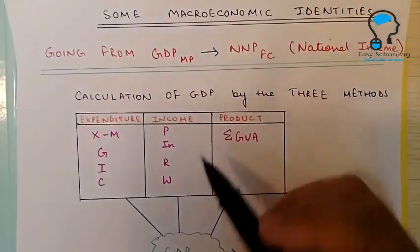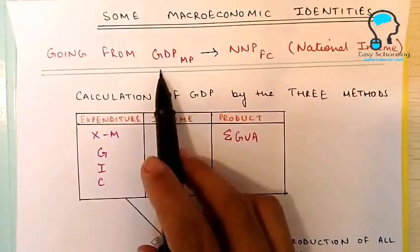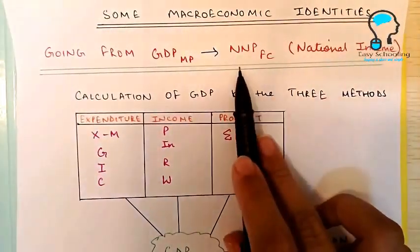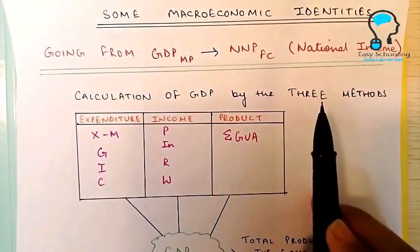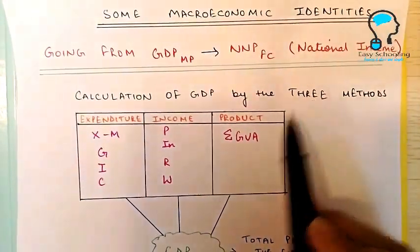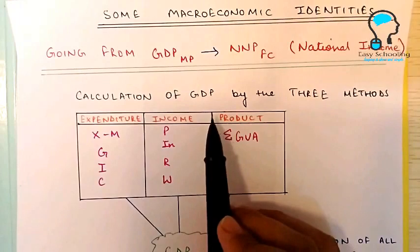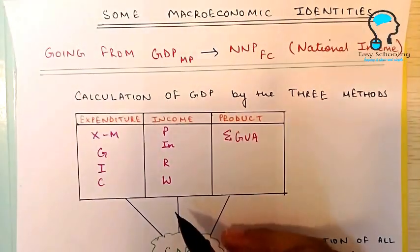In this video we will learn how to move from GDPMP to NNPFC, that is our national income. In the first video we have already understood that there are three methods of calculating the GDP of an economy.